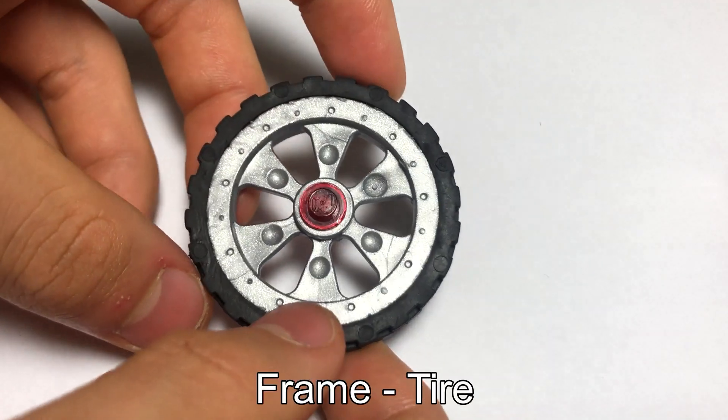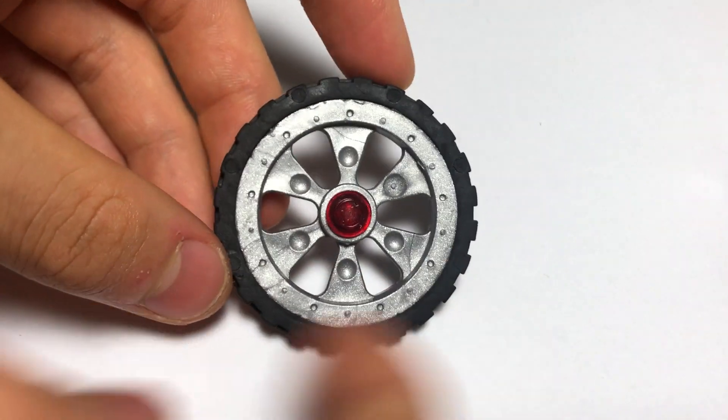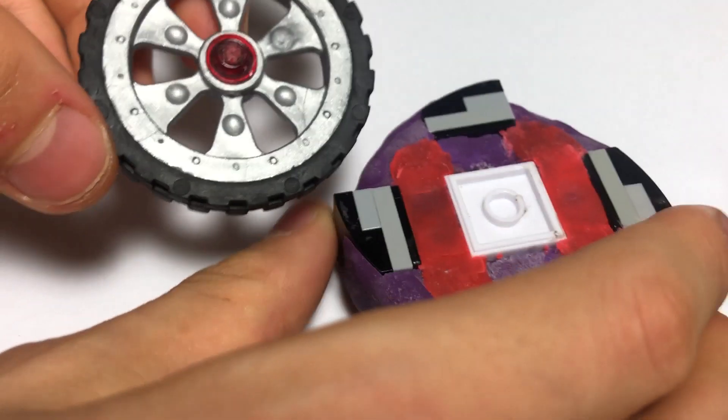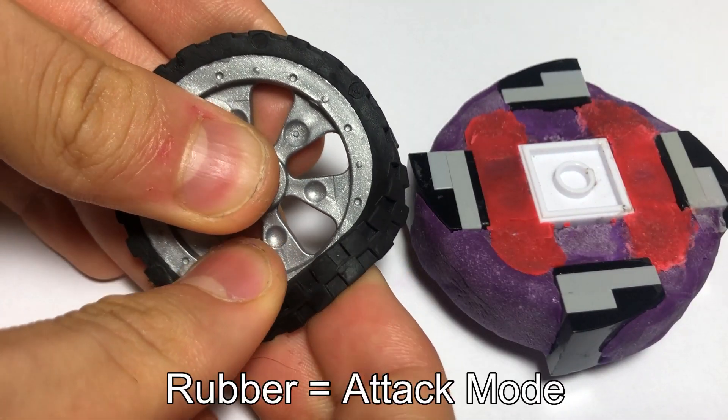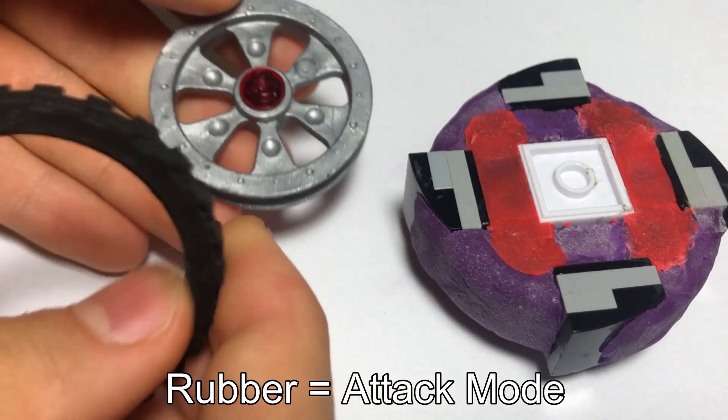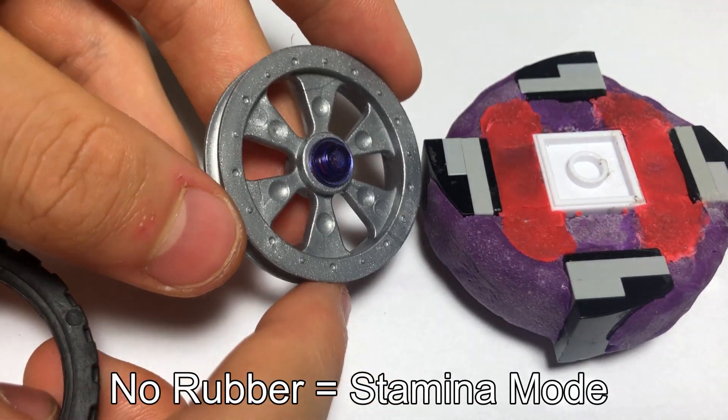Next up we have the tire frame, which you can see obviously is a tire. Now the thing with this frame is that it is a mode-changing frame, with the tire being attack mode, and then you can easily snap it off and have this part with more life after death being stamina mode.